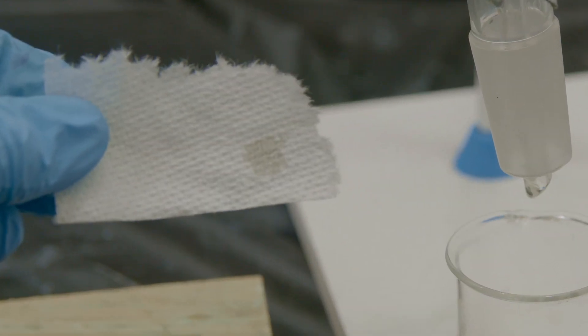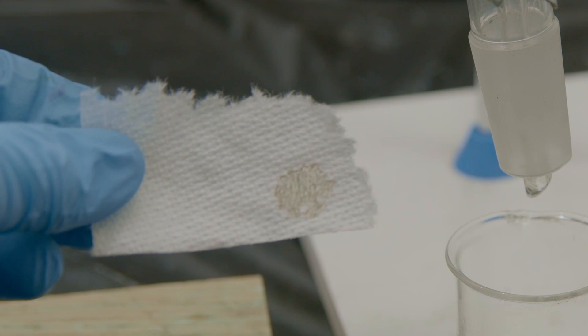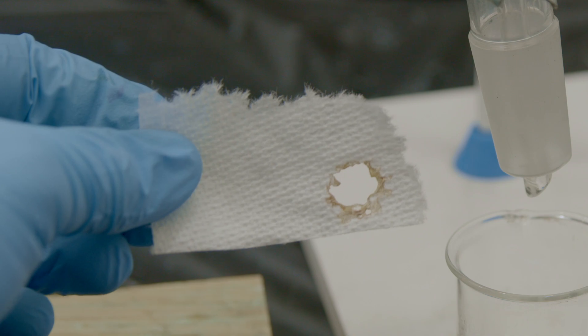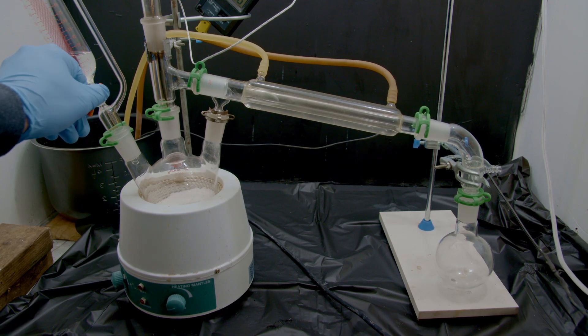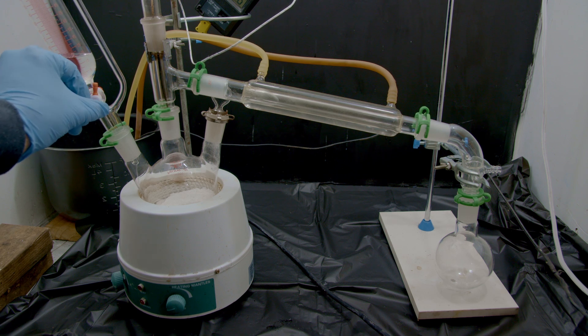You know your acid's good when it eats straight through a paper towel. So for the final step we set up for distillation and we slowly add the sulfuric acid to the sodium acetate drop wise.